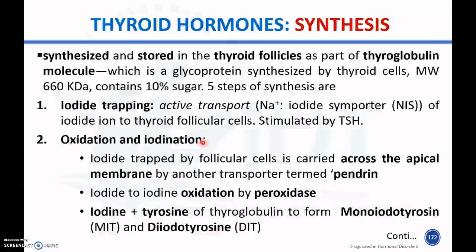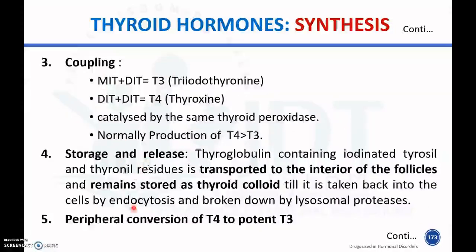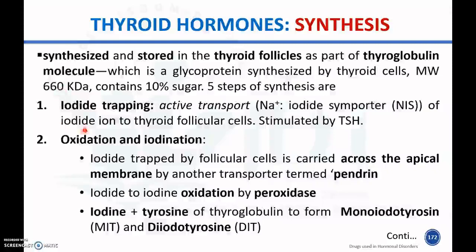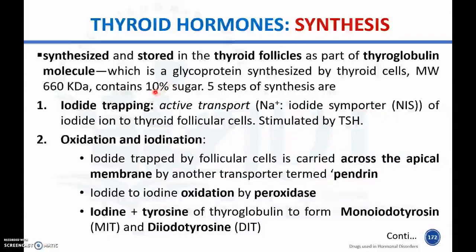The first step is iodine trapping. Iodine present in the capillaries or blood vessels is actively transported through the sodium-iodide symporter (NIS) into thyroid follicle cells. This process is stimulated by thyroid stimulating hormone. So iodine trapping involves active transport of iodine to the thyroid follicles through the iodide symporter.